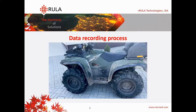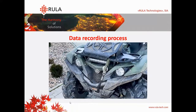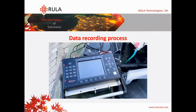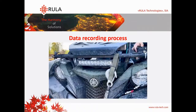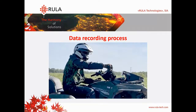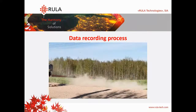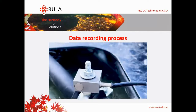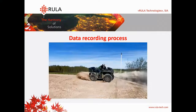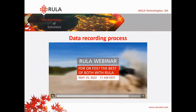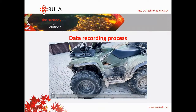Here you can see the recording process of our signal. We placed our RULA R on a quad bike and mounted some accelerometers and recorded data from them. Here you can see our device mounted with cables to sensors. We recorded data from three accelerometers, and this signal represents the road shaking during the ride on the quad bike.